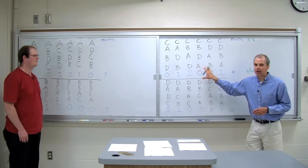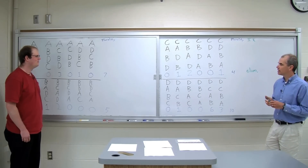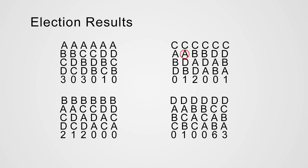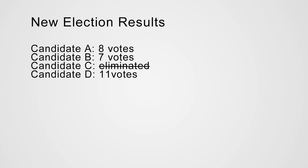Candidate C's votes are not thrown away. What happens is candidate C's votes are sent to other candidates. This voter liked A second best, so this voter's vote will be cast for A in instant runoff — A now has eight votes, the seven votes from before plus this one vote. These two voters liked B second best, so B wins those two votes. That one vote goes to candidate D. So in instant runoff, the new vote totals are eight for candidate A, seven for candidate B, and eleven for candidate D.